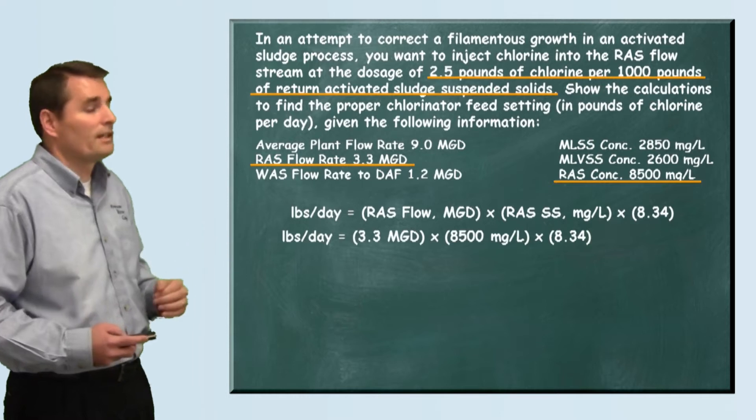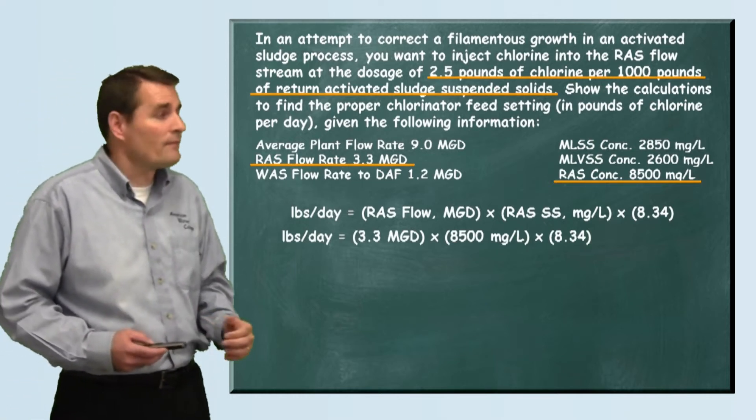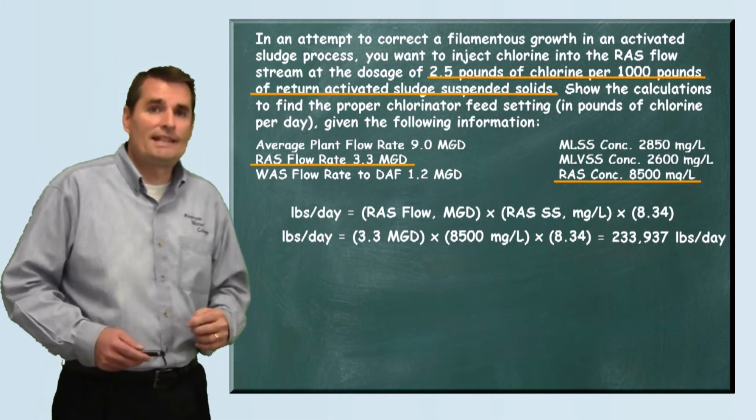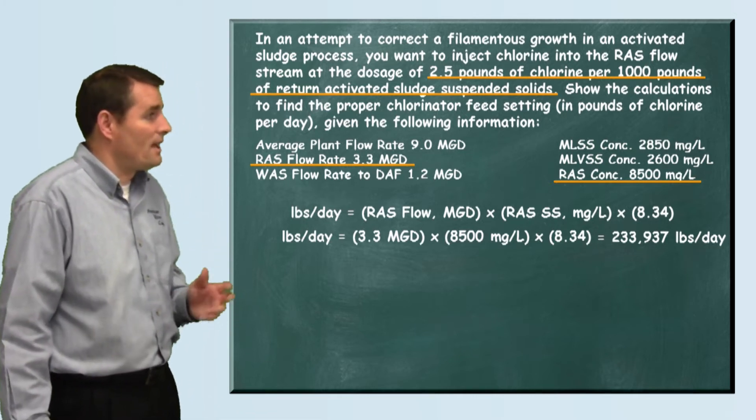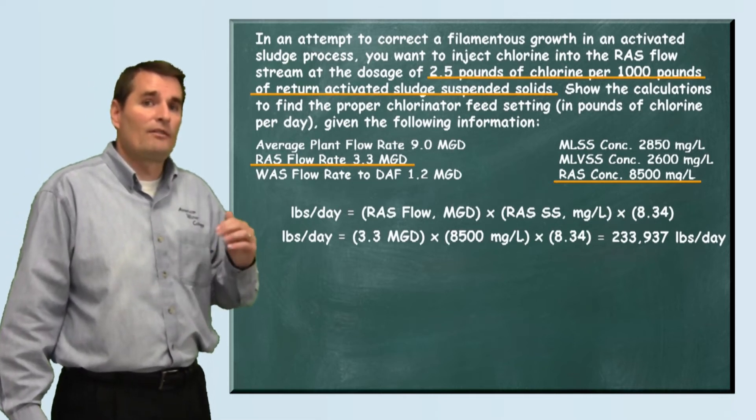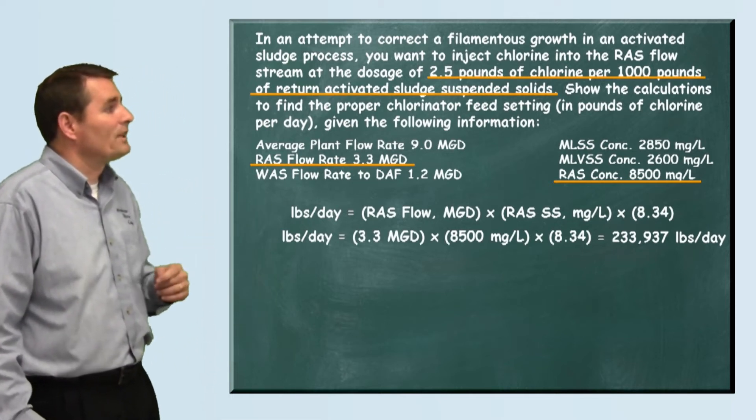So using those numbers, we can plug that into our pounds formula and we find that we have 233,937 pounds per day. So that's how many pounds per day of return activated sludge we're returning.